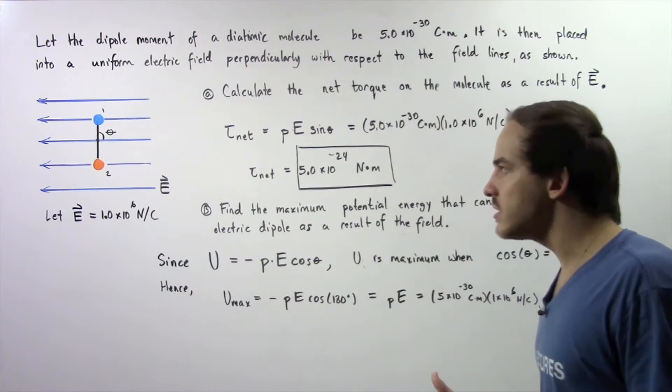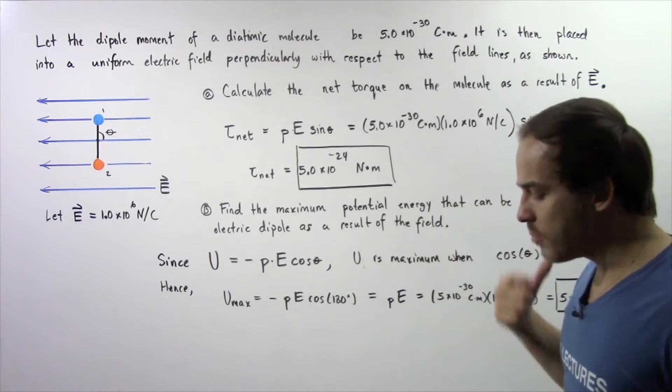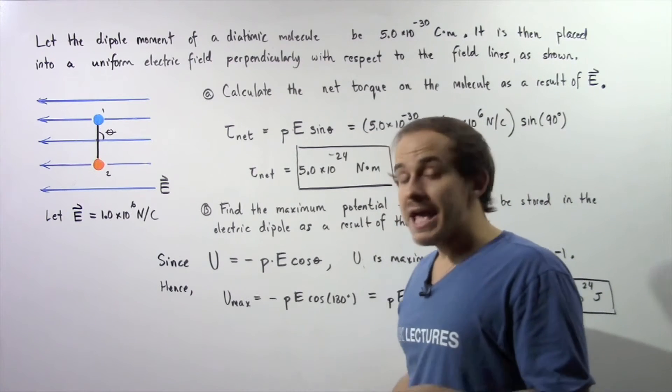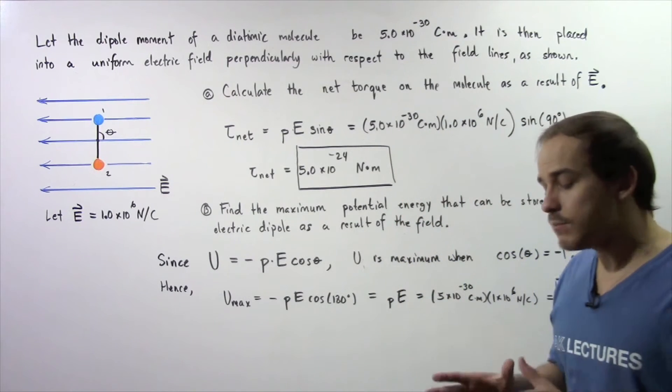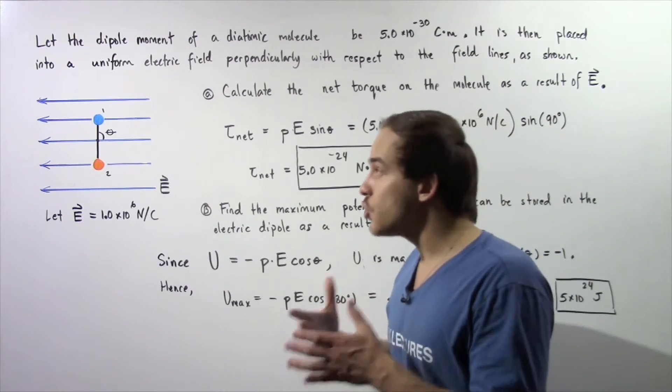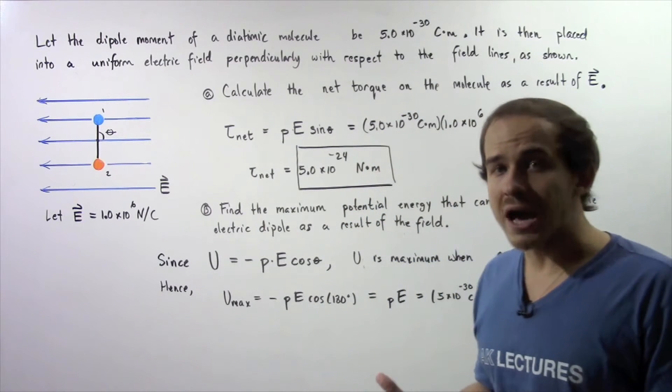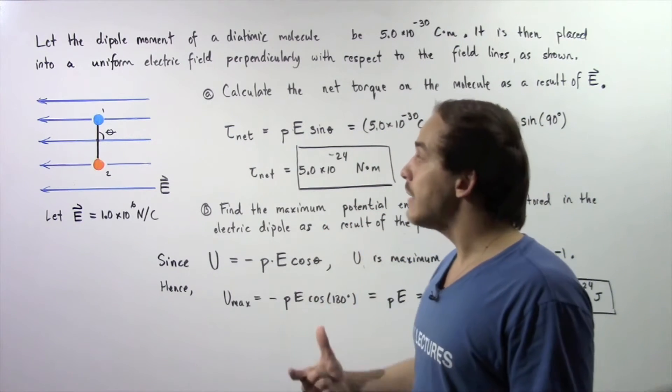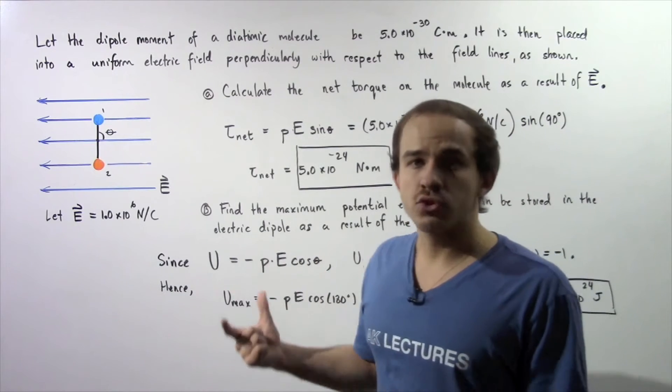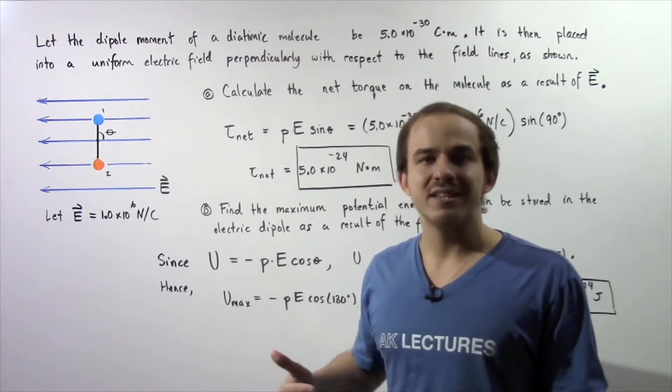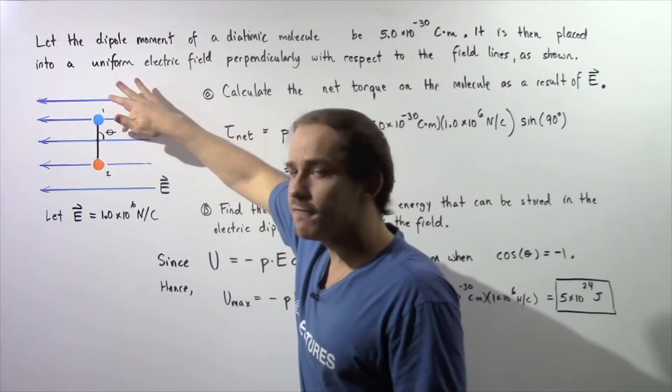So we want to calculate the net torque in part A. Now in the previous lecture we were able to show that the net torque is equal to the product of the electric dipole moment and the electric field multiplied by the sine of this angle theta.